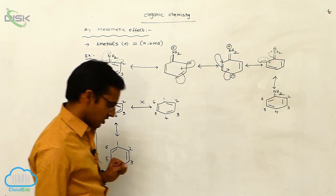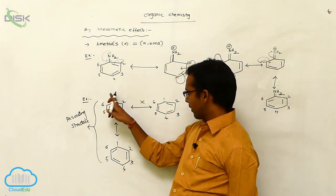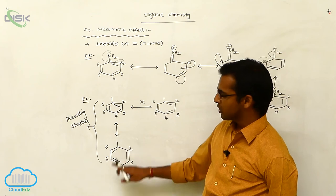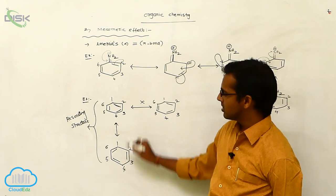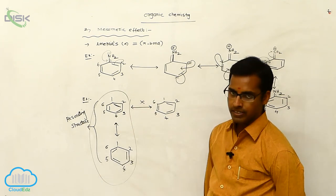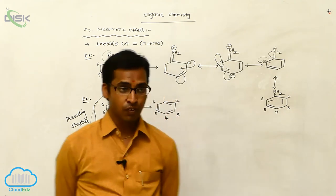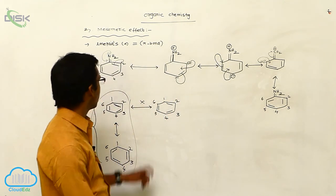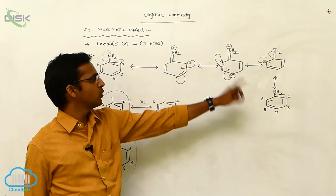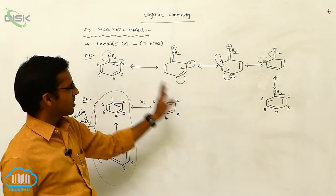In the resonating structure of benzene, at positions 1 and 2 a pi bond is present, while in the other structure at positions 1 and 2 there is no pi bond. This is called the resonating structure of benzene. Generally, benzene shows 5 resonating structures — one ring shows 5 resonating forms: 1, 2, 3, 4, 5. All the resonating forms are the same.